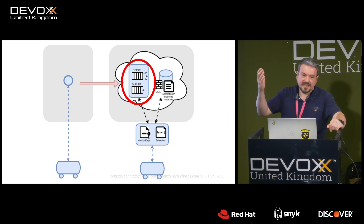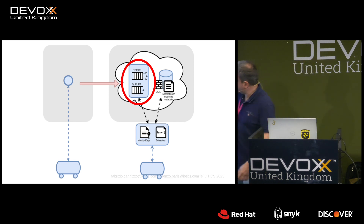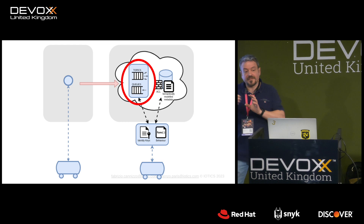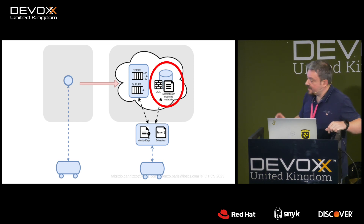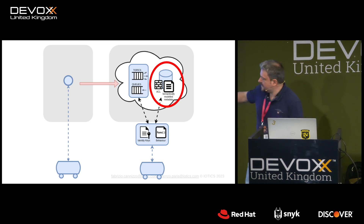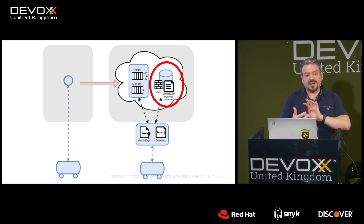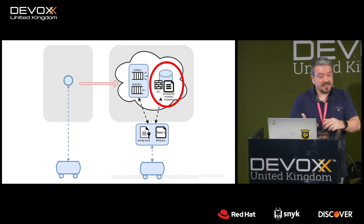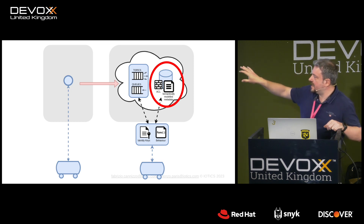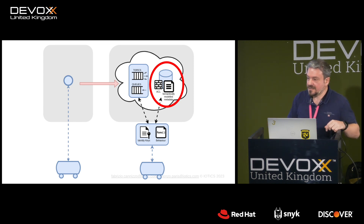Next you need another runtime with topics and queues — inputs and outputs — where data can flow. A function takes data from the device and decides to broadcast it or listen for commands from other devices. Finally, there's a bit of storage where the function publishes metadata — like a Yellow Pages — declaring who you are, what you do, what data you can provide or receive.